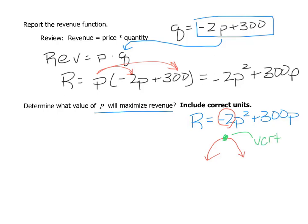The vertex is where our function reaches its maximum or minimum. So what we need to do is use our vertex formula to find the value of P. Remember the formula is negative B over 2A. Here my A is negative 2 and my B is 300.